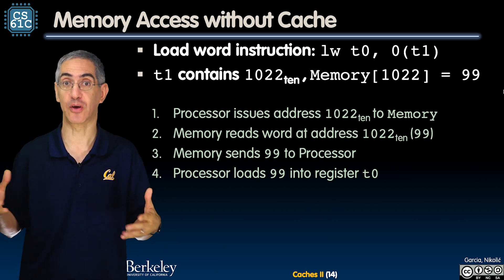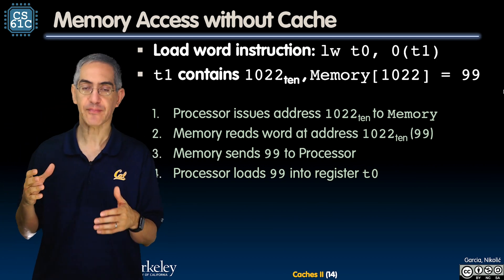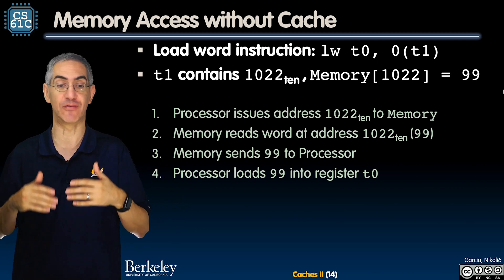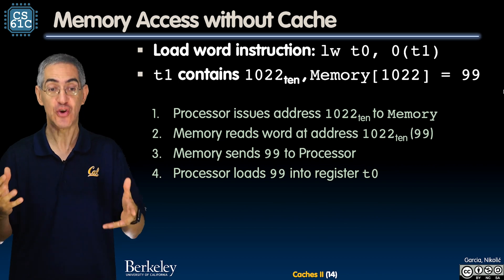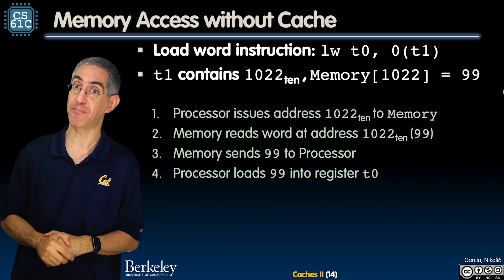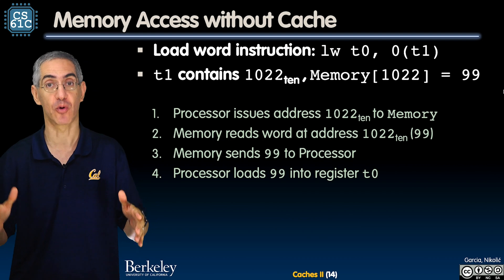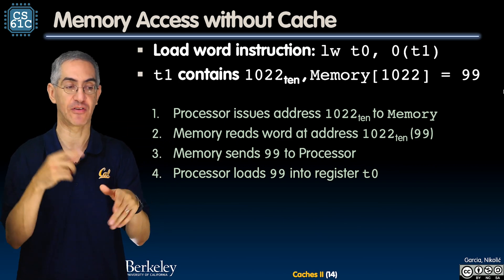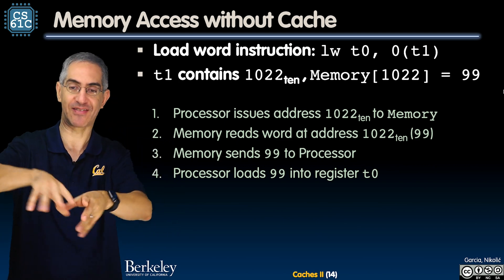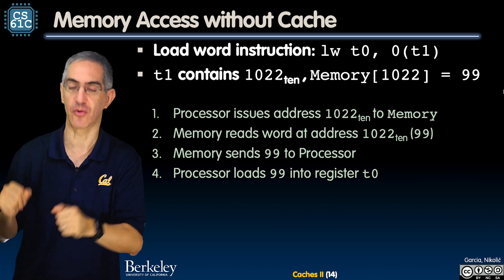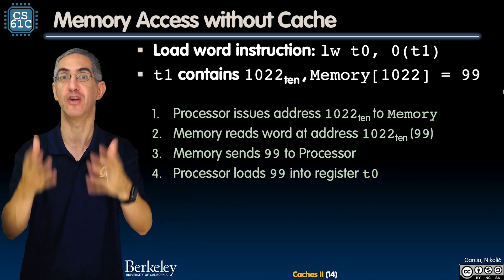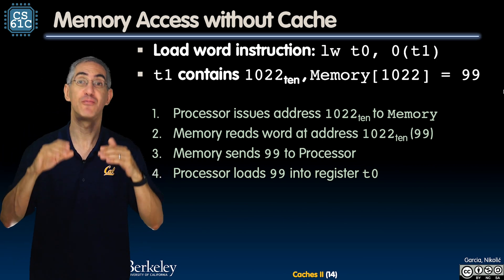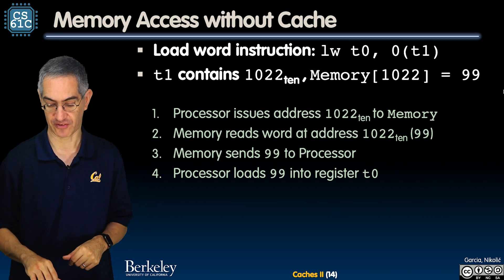At this point in the course, you can explain the entire data path of how a load word works — what lights up, the control lines, the muxes, the zero immediate added to the memory location. You know how to route everything on a RISC-V machine. It's really powerful understanding.